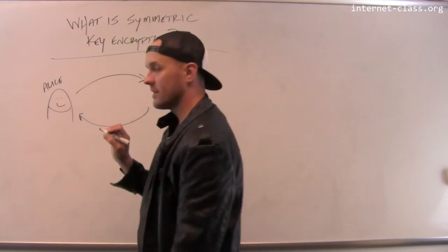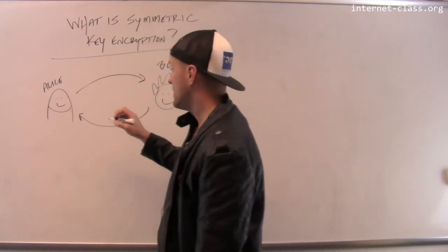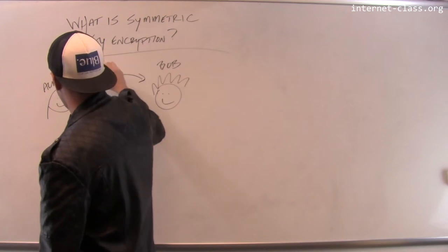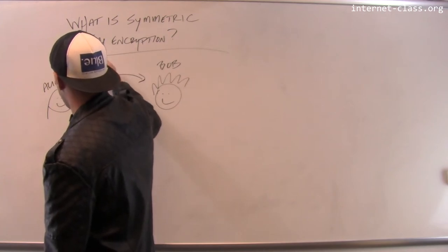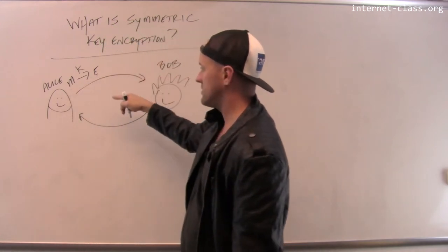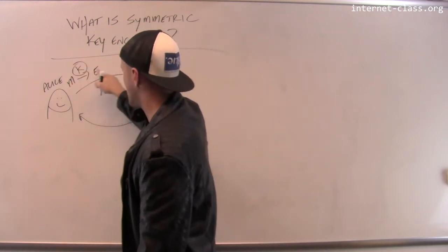So when Alice wants to send a message to Bob, she takes the original message and she encrypts it using some key and she gets the encrypted message. So we'll call the encrypted message E. So she encrypts the message using this key K and sends it to Bob.